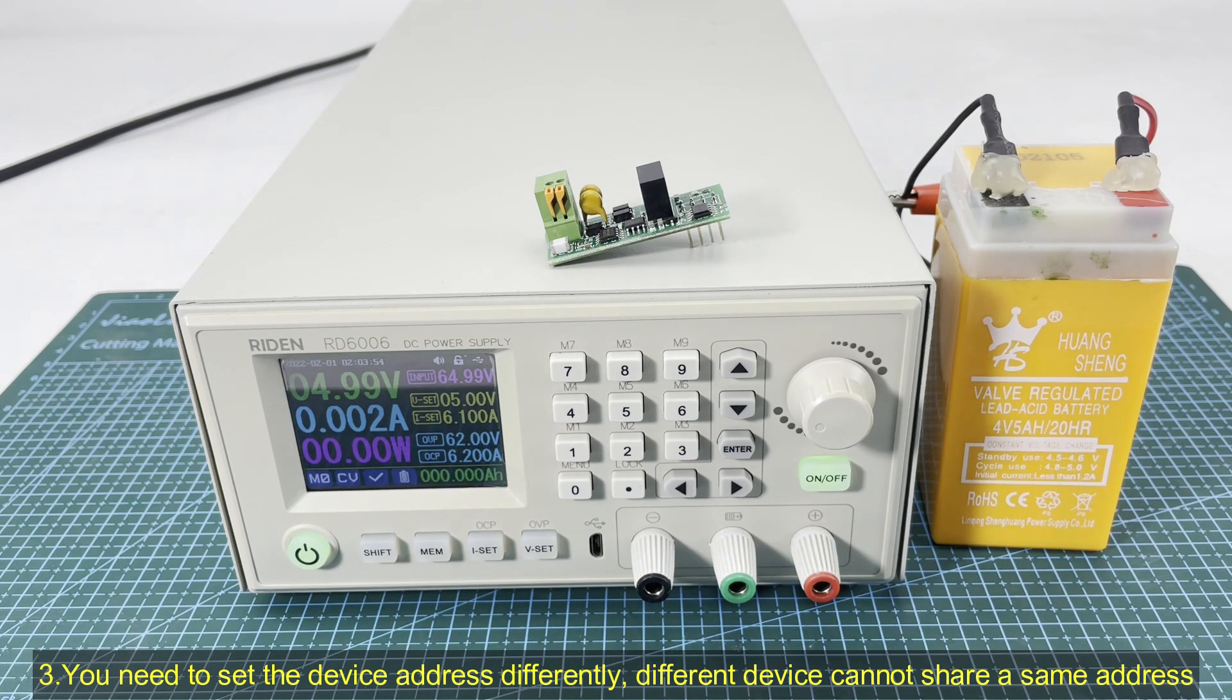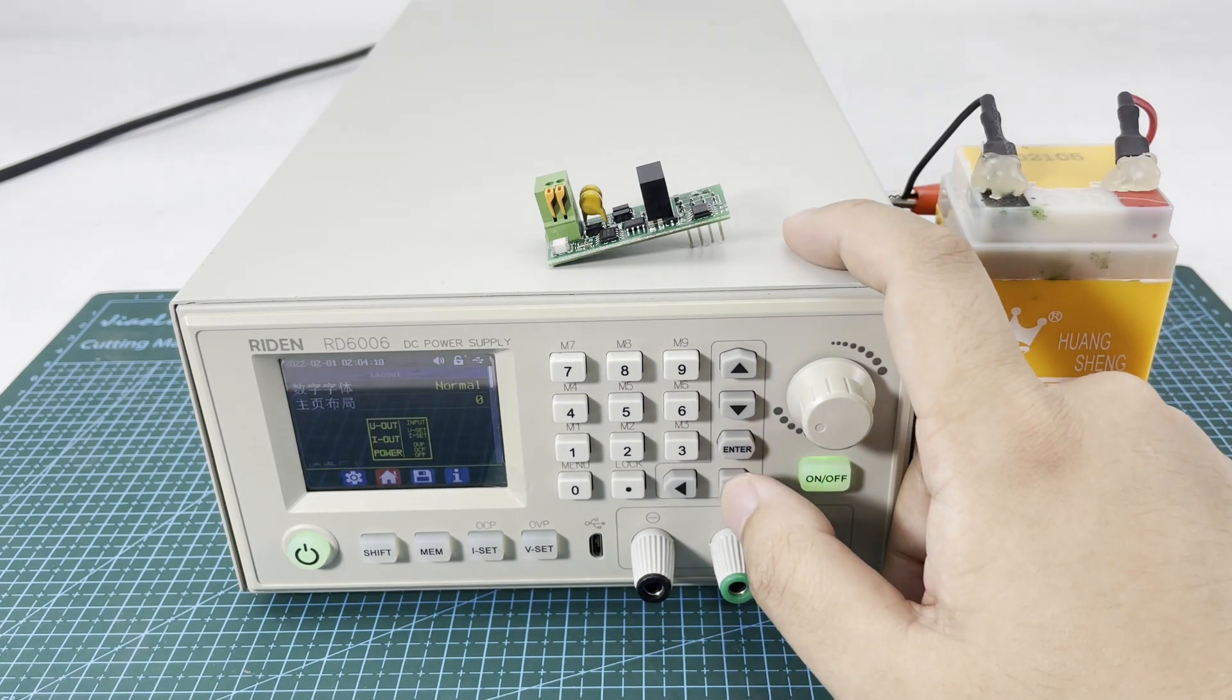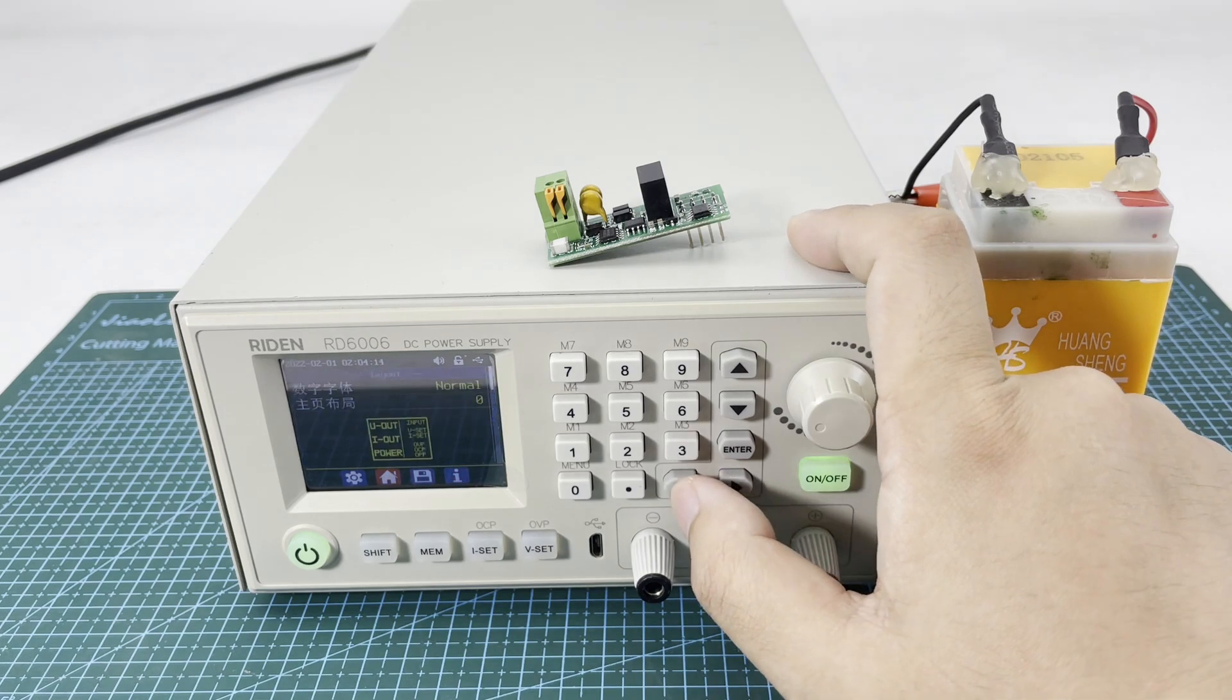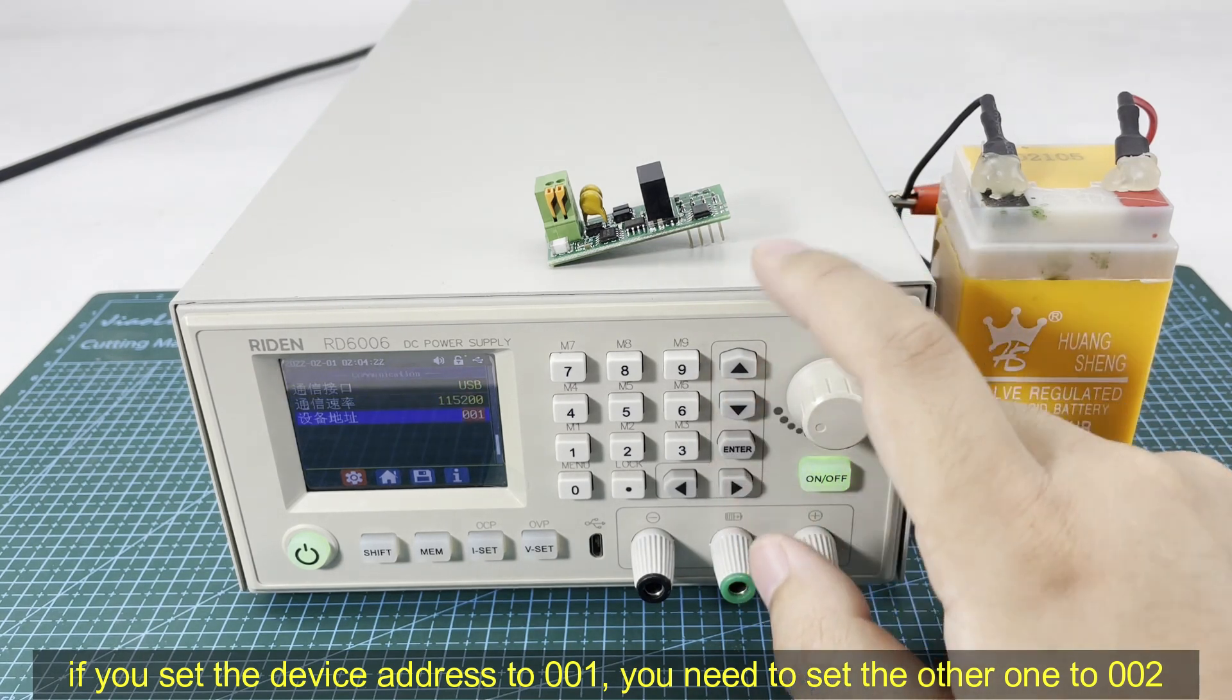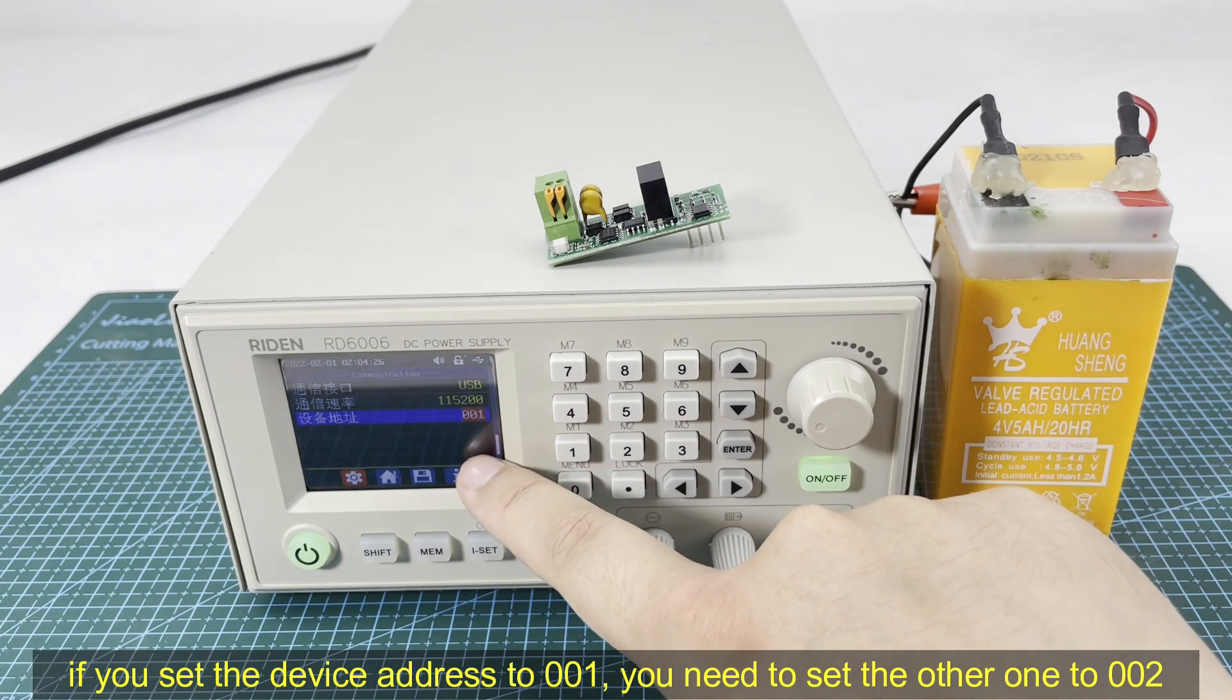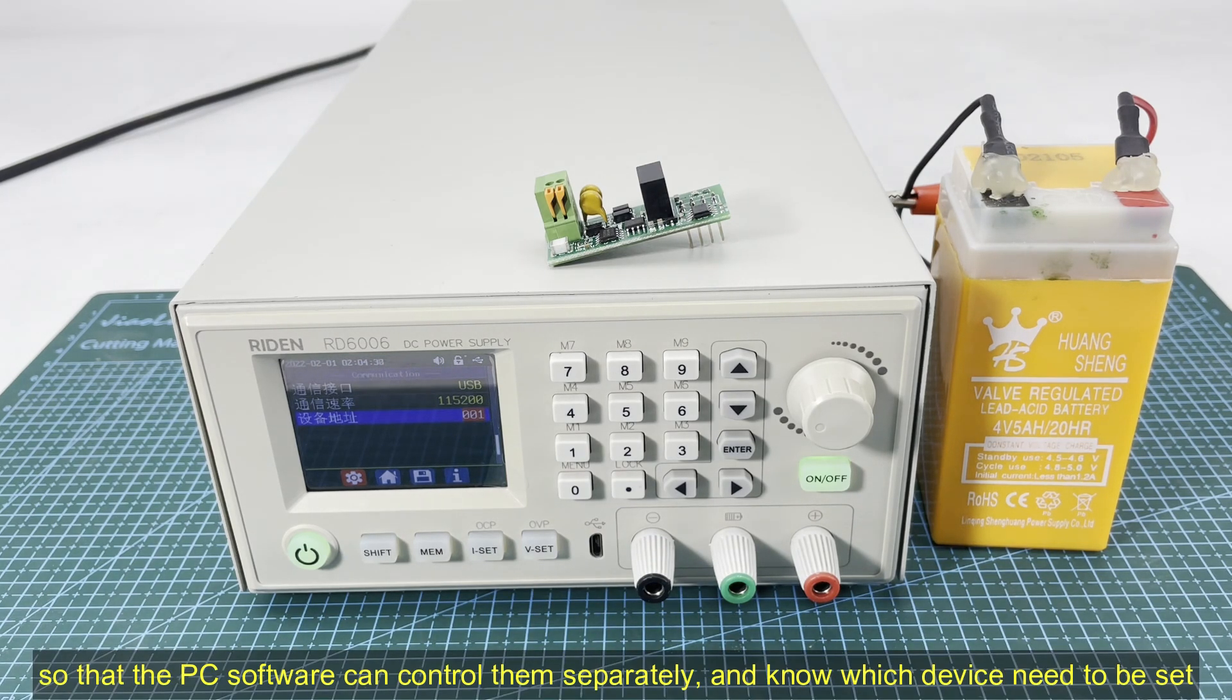The third thing you need to know is that you need to set the device address differently. Different devices cannot share the same address. You can see the address of this is 001, so if you connect two devices, one is 001 and the other one is 002, so that the PC software can control them separately. Otherwise the PC software does not know which device needs to be controlled and the data needs to be changed.